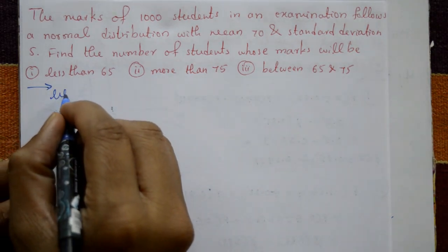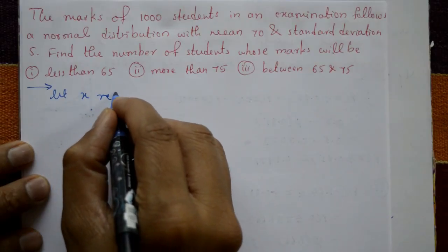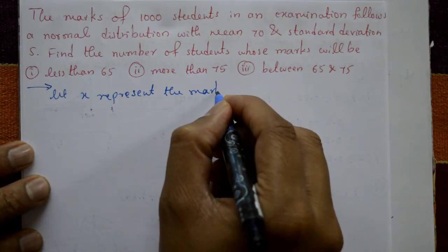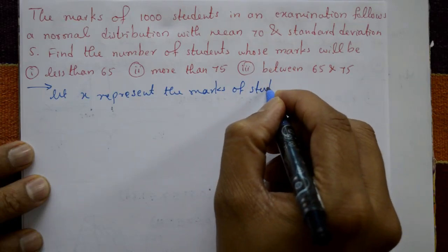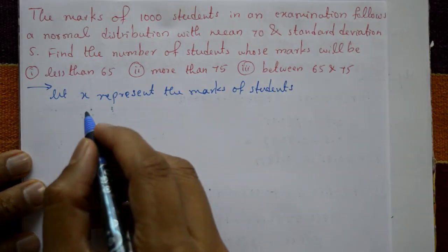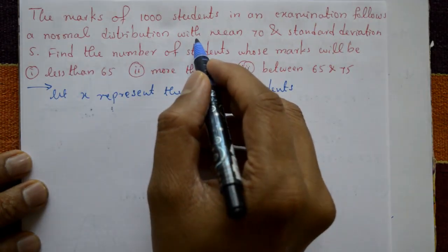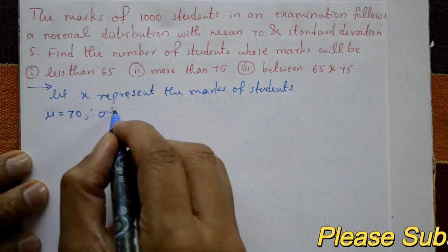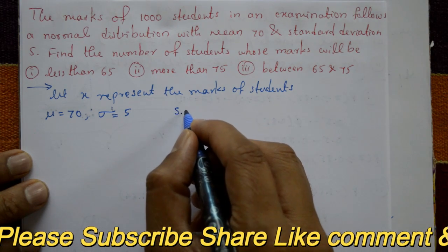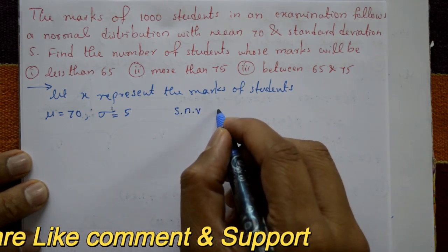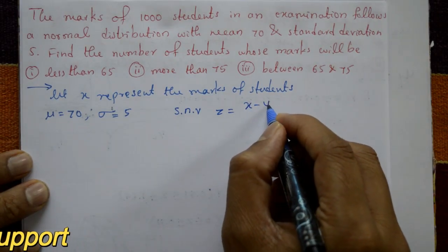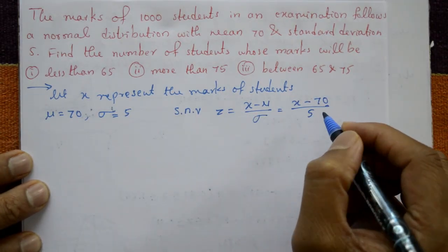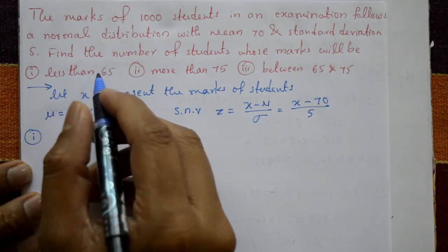This is a normal distribution problem. Let X represent the mass of the students. The mean is given as μ = 70 and standard deviation σ = 5. The standard normal variate is Z = (X − μ) / σ = (X − 70) / 5.